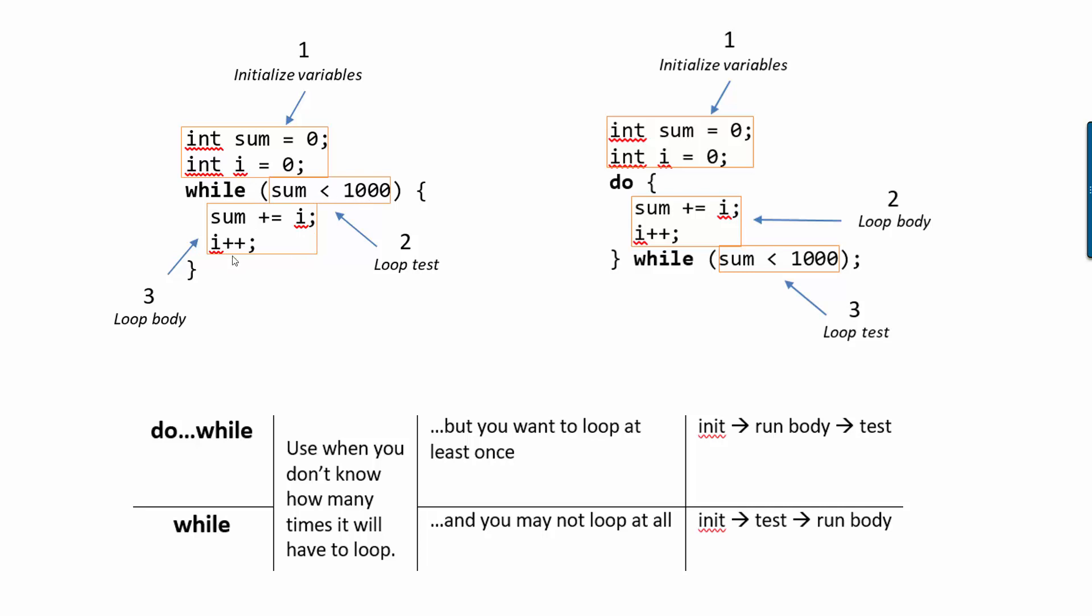If the loop test is true, then you would run the loop body. And when you get down to the bottom, you go back up to the top and you perform the loop test again. So that sequence is the same as the for loop.